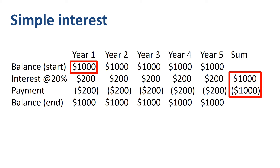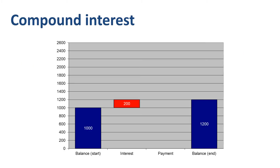If you thought that paying 20% simple interest was bad, then let's look at what 20% compound interest does. Compound interest occurs when you have an outstanding debt balance and have the interest charged added to your outstanding debt balance. 20% interest on the opening debt balance of $1000 is $200, so you end year 1 with $1200 in debt.